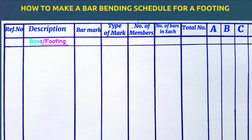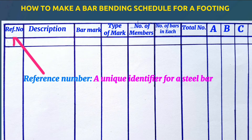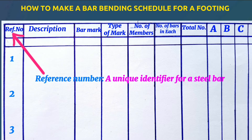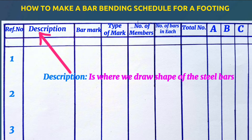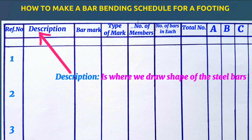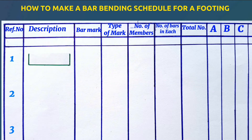Let's begin with the base of footing. Let's first clearly understand what each of the above means. Reference number simply means a unique identifier assigned to each steel bar — for example 1, 2, 3 among others. Under the description is where we draw the shape of the steel bars, for example the footing, column starter bars, among others.